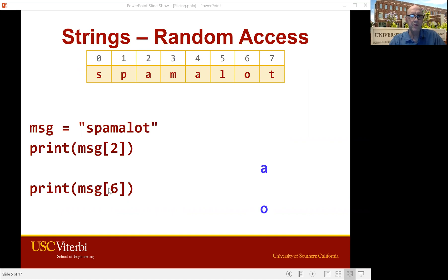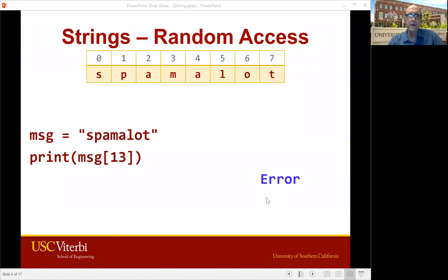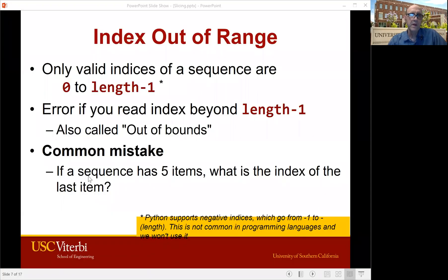Similarly, if we pull MSG square bracket six, that's going to be the O. And if we print that out, we get O. Now you have to watch out — if you ask for MSG square bracket 13, there isn't one, so you're going to get an error. It's not the print that causes the error; it's the trying to get to that element in the first place. We call this index out of range. The only valid indices are zero up to the length minus one of the sequence.